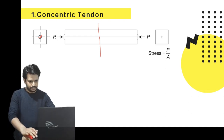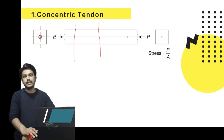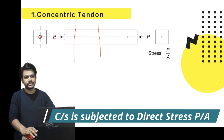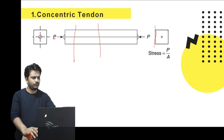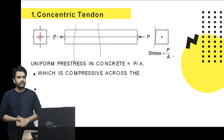The magnitude of the prestressing force is P kilonewtons. If we consider any cross section throughout the length of the member, it will be subjected to compressive stress only, and the magnitude of that stress will be equal to P by A, where P is the prestressing force and A is the cross-sectional area. The stress diagram is uniform with magnitude P by A, because the tendons are placed concentrically.